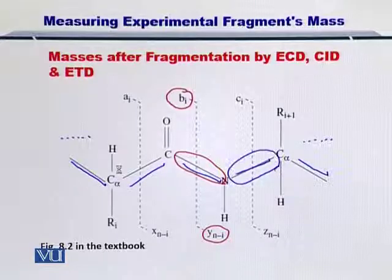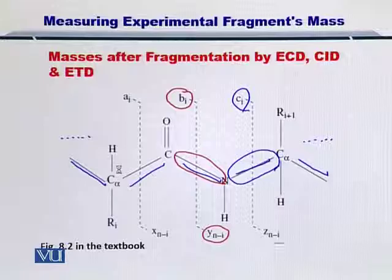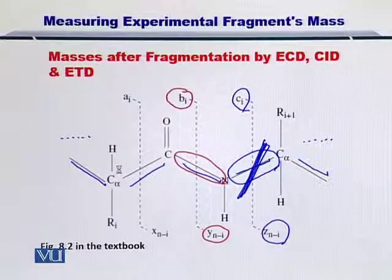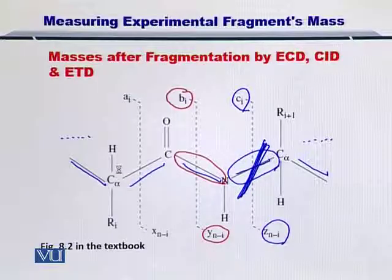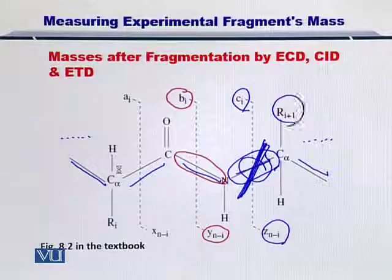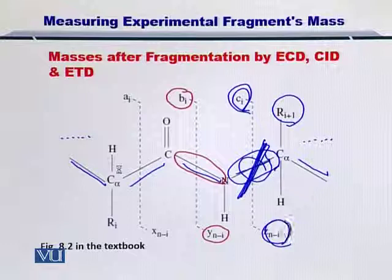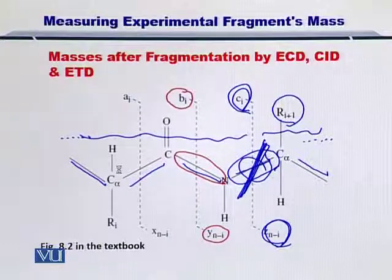However, if the alpha carbon and amino terminal bond is fragmented, then you have the C and Z ions. Once the fragmentation has occurred to form C and Z ions, you will have two fragments. But in the sample you have so many molecules, so it is possible that in this case, if this bond is broken at, let's say, the R(i+1) residue, then for some other molecule of the same protein, a different bond will be fragmented. The result will still be C and Z ions, but the length of the fragments will be different.